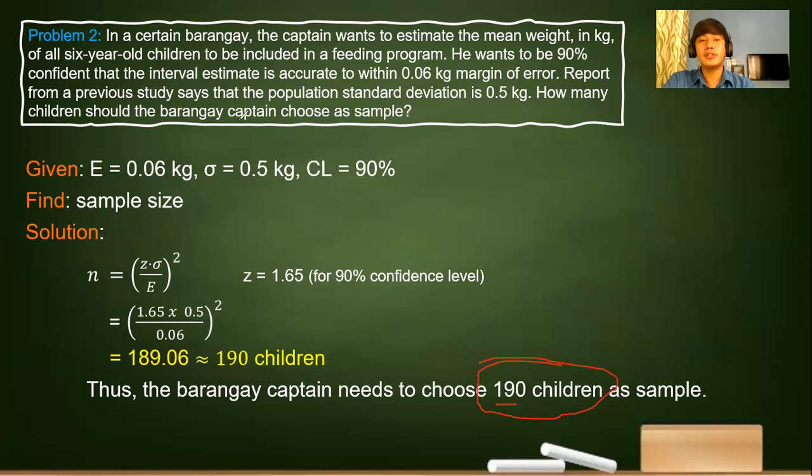In order for his feeding program to be successful, he must really determine how many children must be used as a sample for the said feeding program. This formula helps us in determining the number of children he needs in order for his feeding program to be successful. This is a very practical example of the use of computing for the sample size.